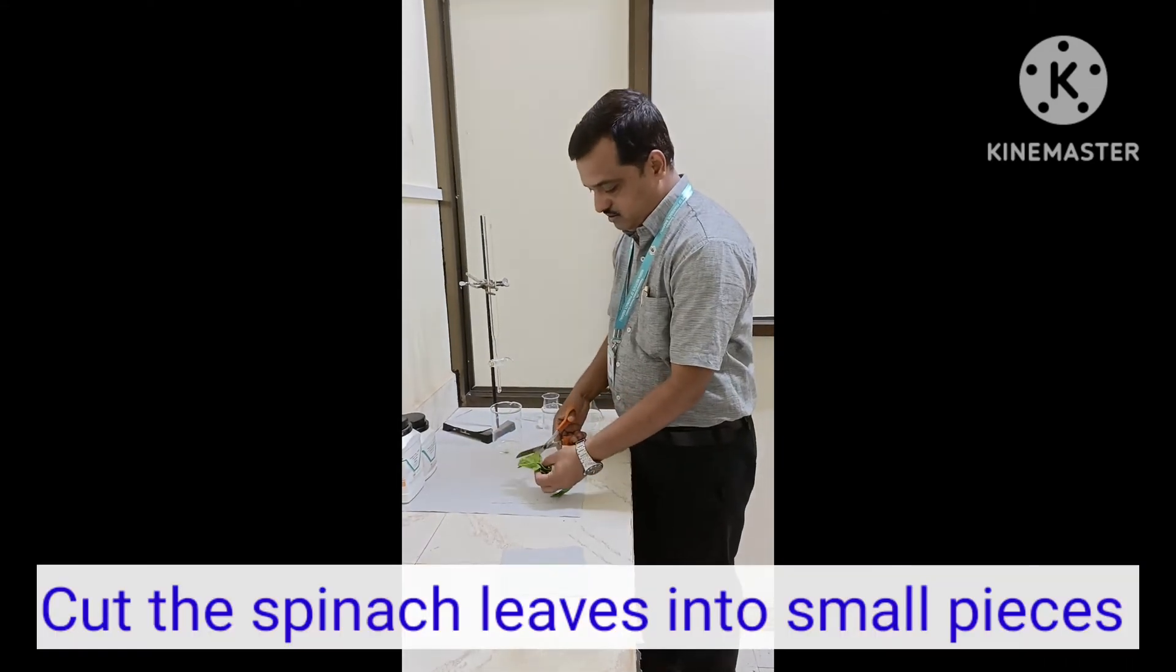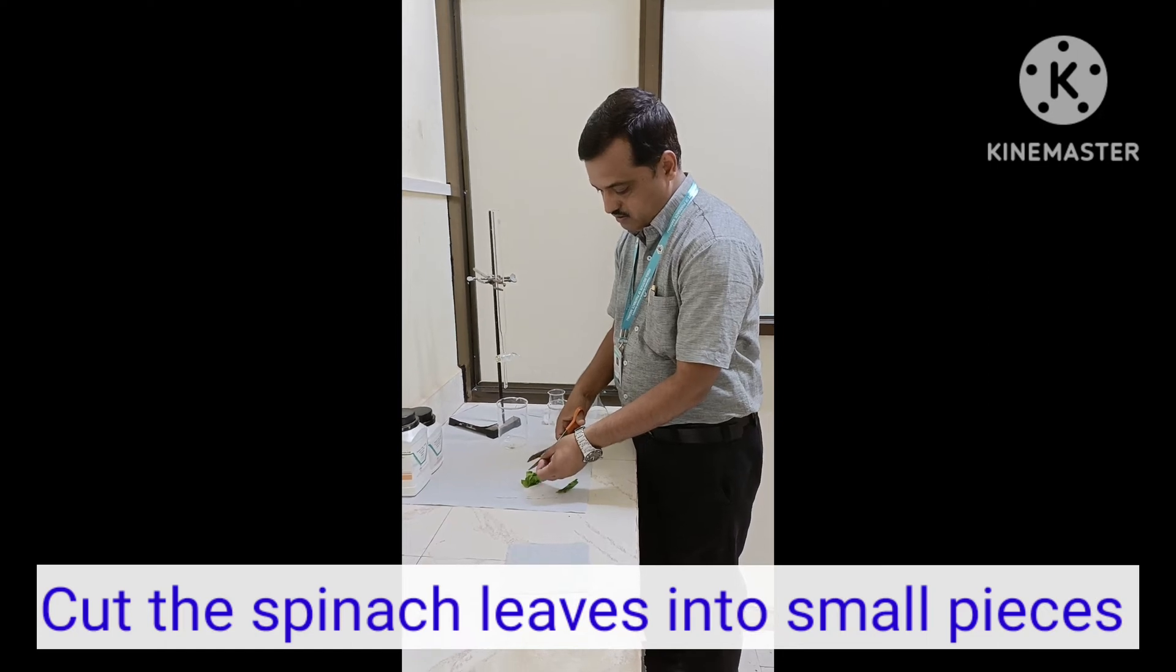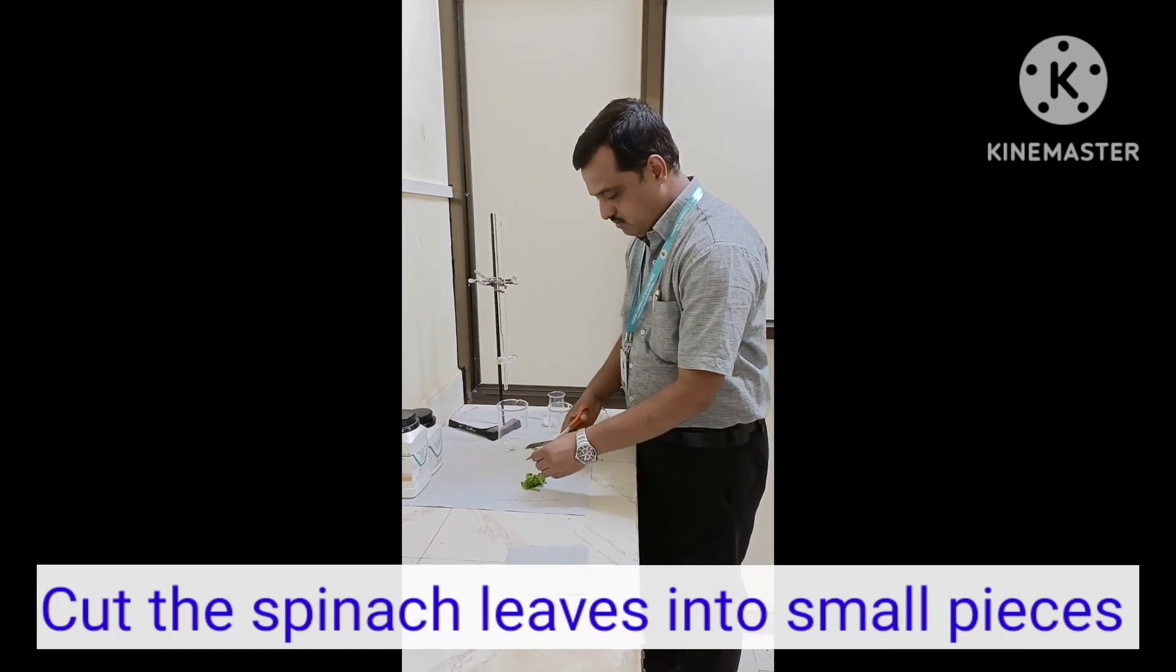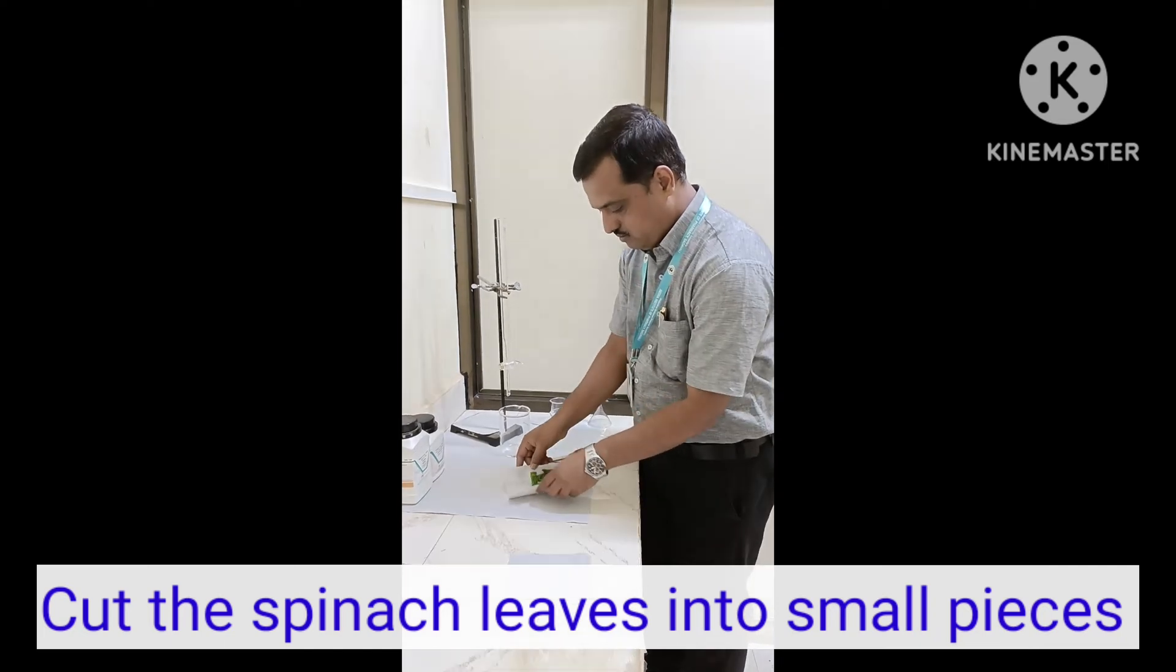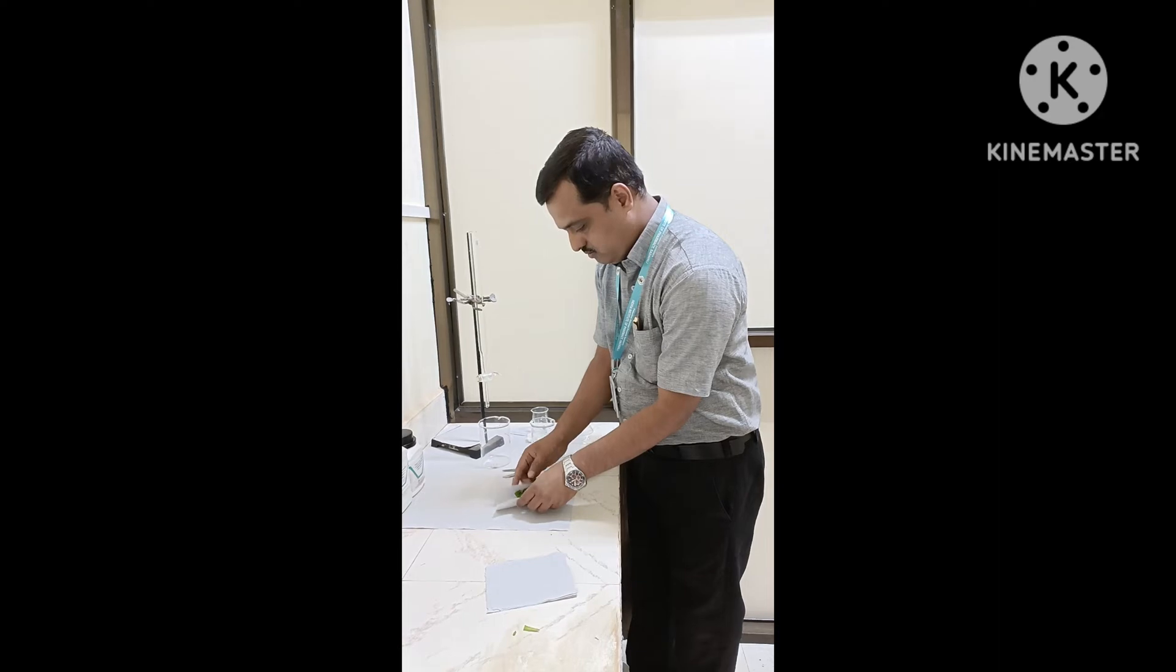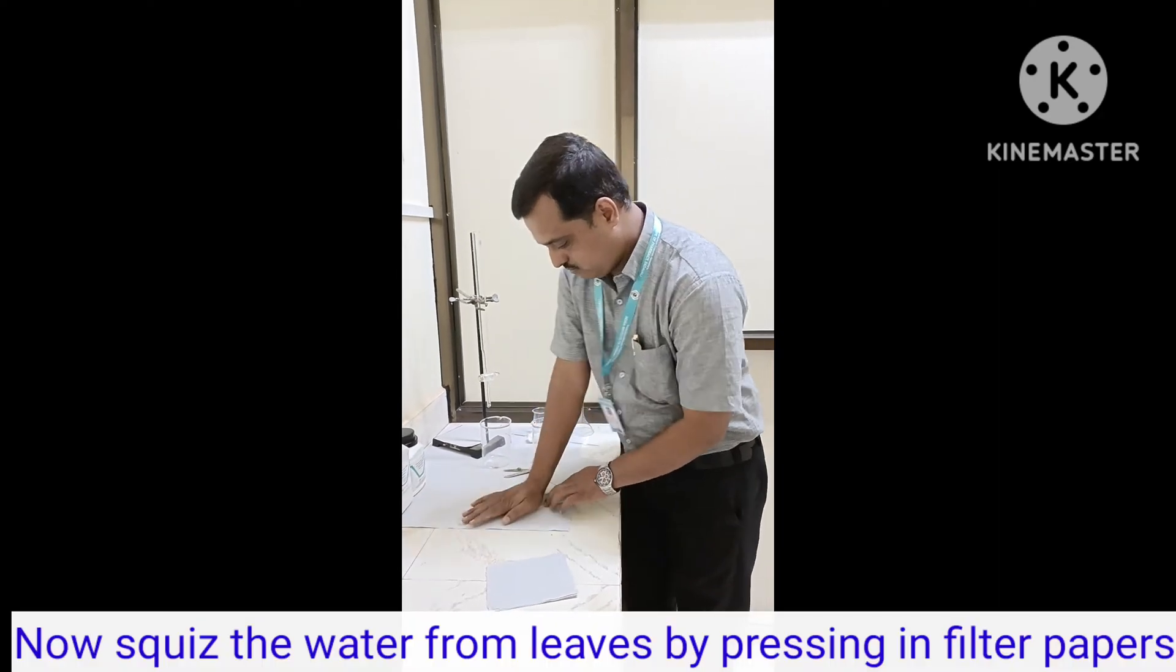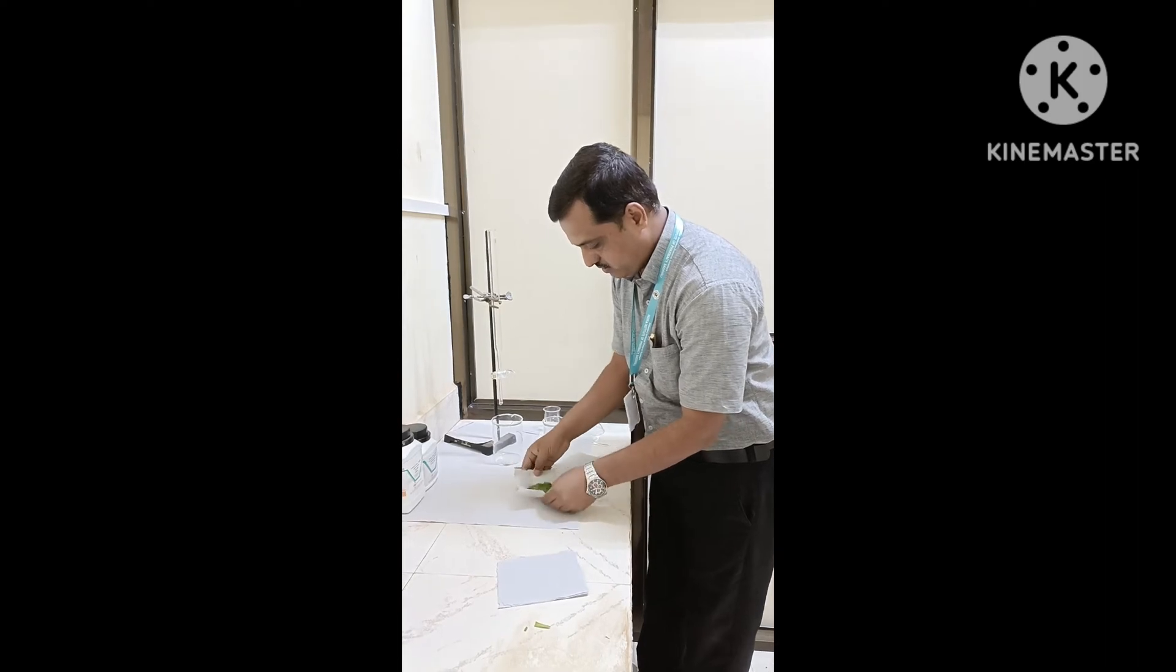Hello friends, this video demonstrates separation of beta carotene from spinach leaves using simple column chromatography. First, we need to take fresh spinach leaves, cut them into small pieces, and then squeeze them.